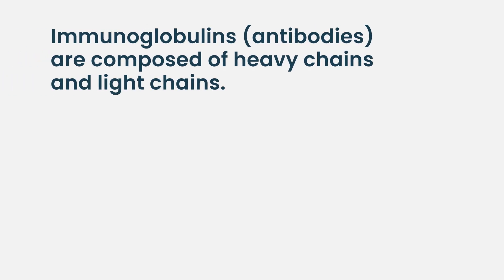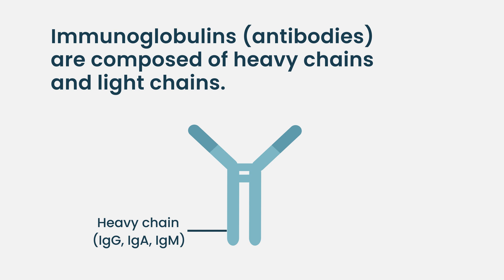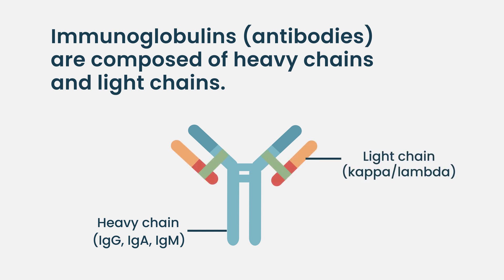Immunoglobulins, or antibodies, are composed of a heavy chain — which can be IgG, IgA, or IgM. The immune system also forms IgD and IgE, but these are not really implicated in cases of multiple myeloma. And then there are also light chains, which are kappa or lambda.